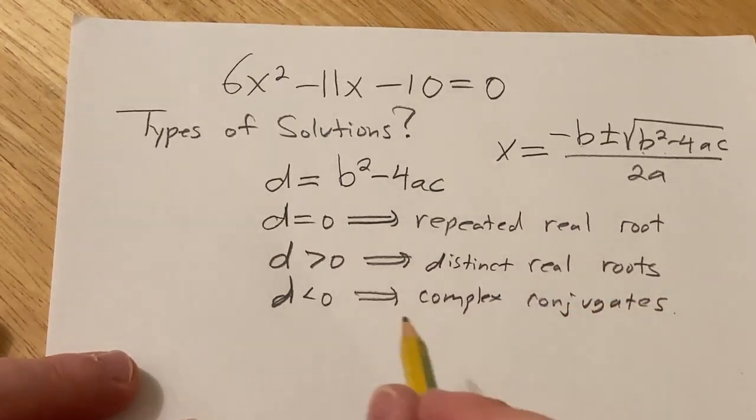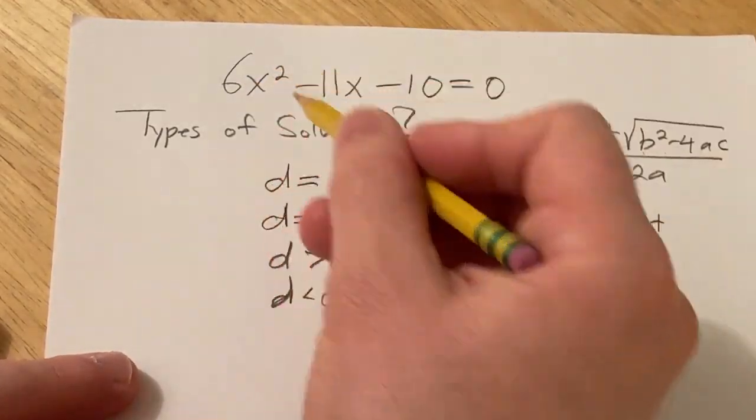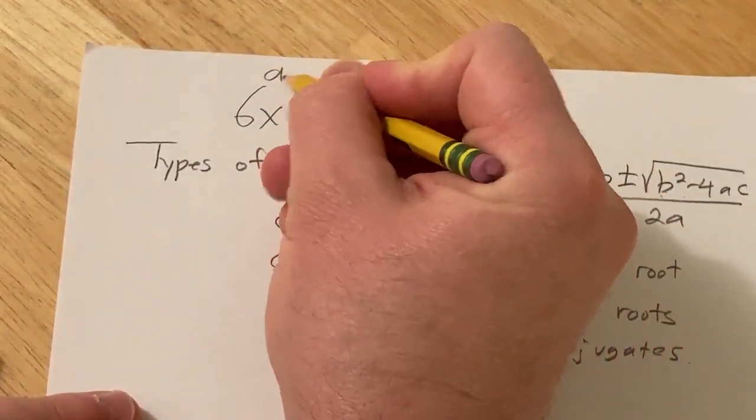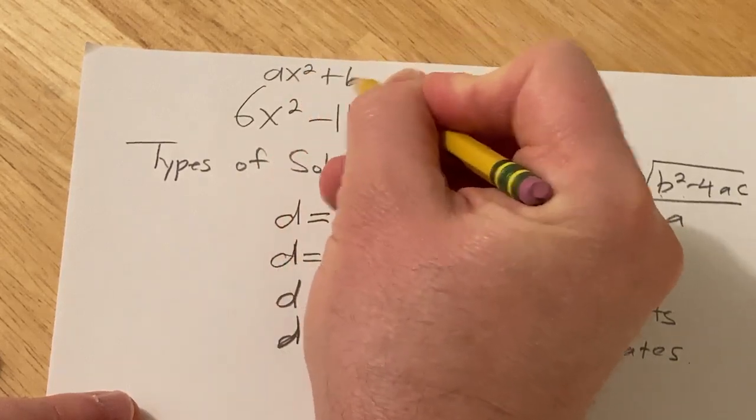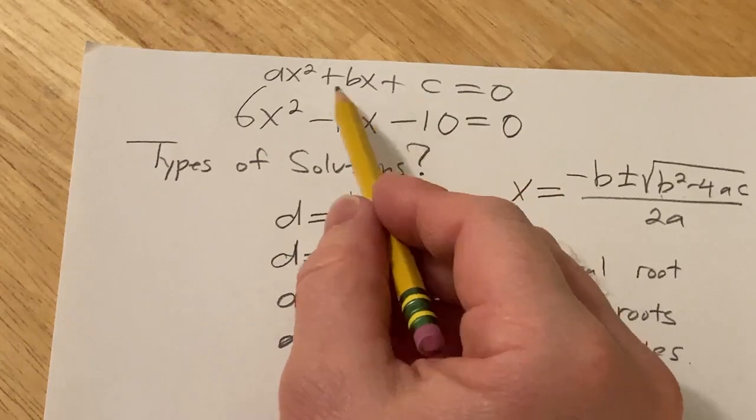Alright, so let's go ahead and do this problem here. So to find a, b, c we just use matching. We match this with the quadratic equation which is written this way. That's the form of the quadratic that we're matching it with.